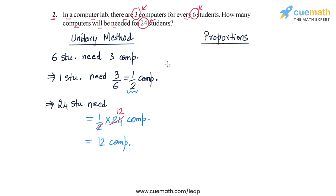And in this we make two ratios which are equal. So we have to find the number of computers needed for 24 students. So 3 computers are there for every 6 students. So let's say that there are x computers needed for 24 students.